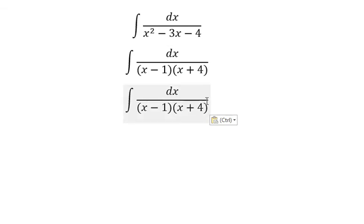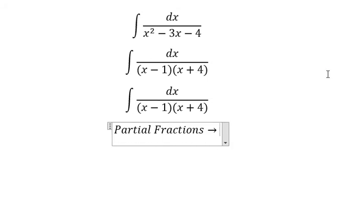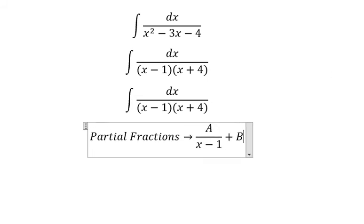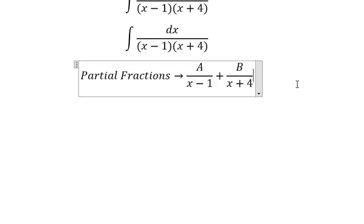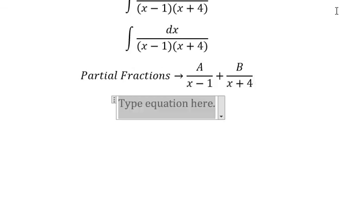Next, we need to use partial fractions. So we will have capital A over x minus 1 and capital B over x plus 4. Next, we need to use a common denominator.